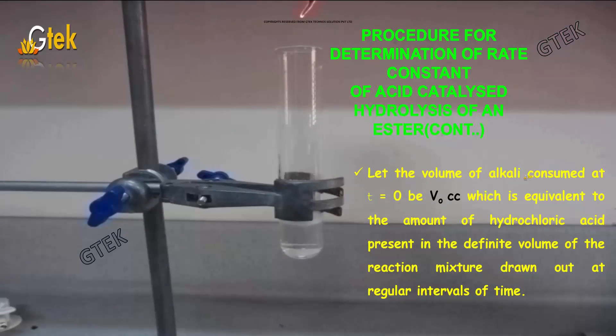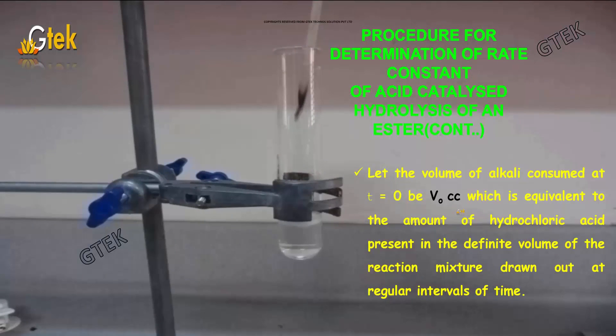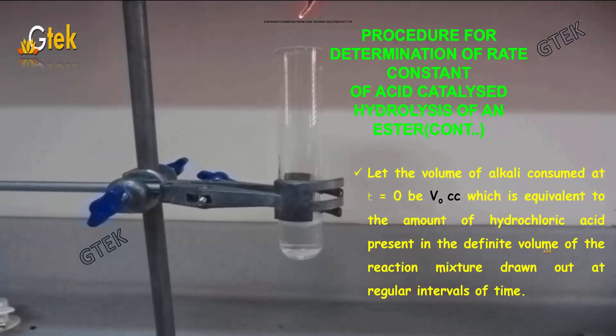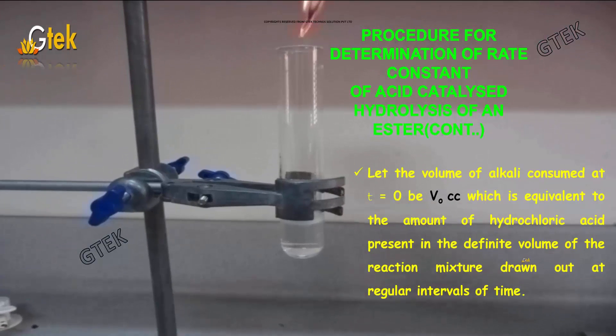Let the volume of alkali consumed at t = 0 be V₀ cc, which is equivalent to the amount of hydrochloric acid present in the definite volume of the reaction mixture drawn out at regular intervals of time.